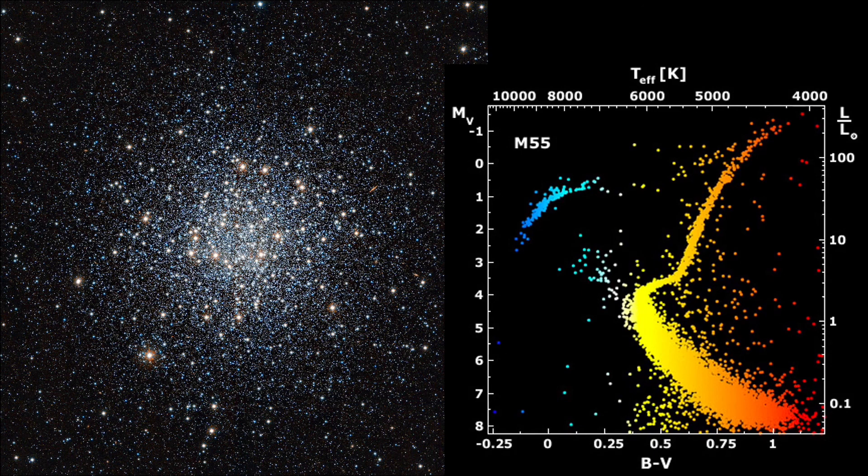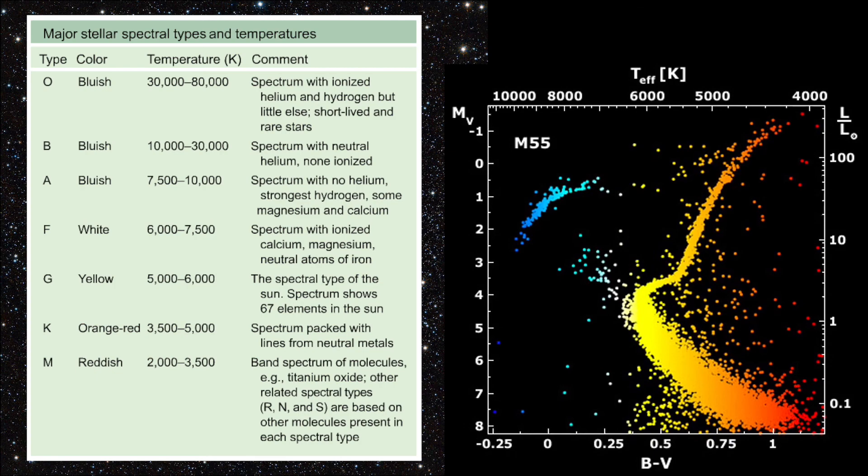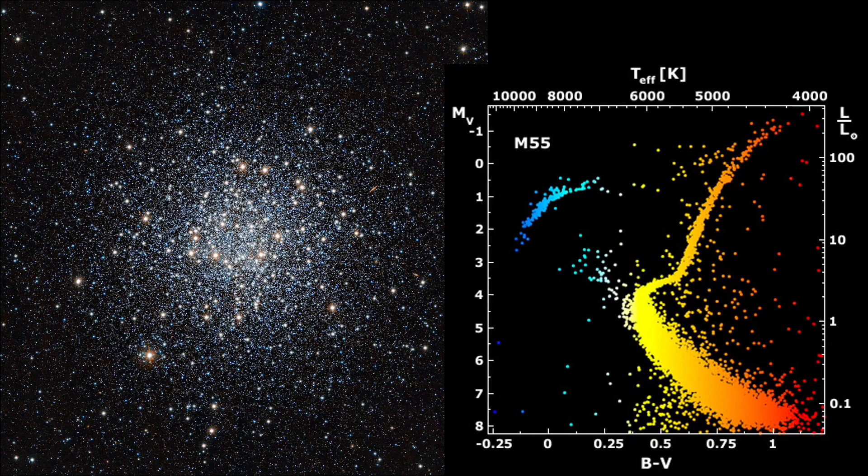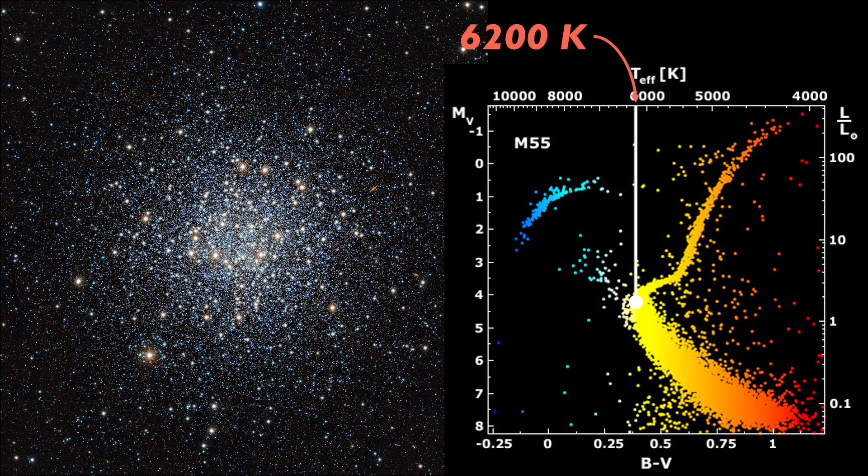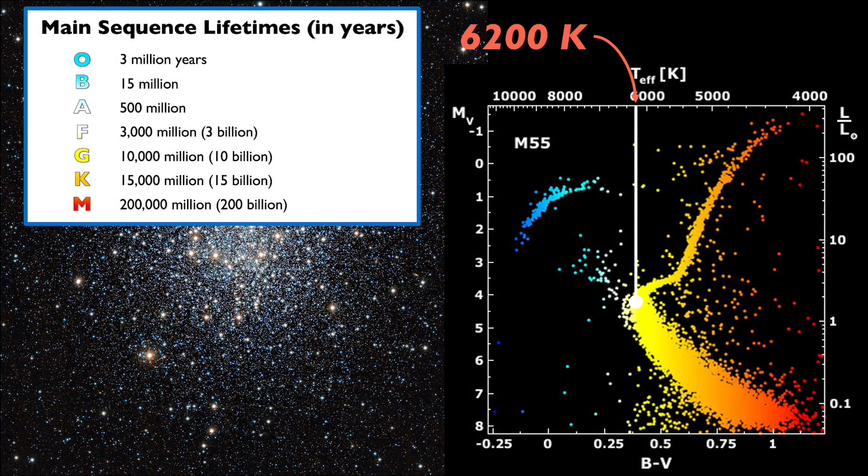Well, recall that the temperatures are associated with specific spectral types, and we can use that approach to determine the age of this star cluster. The main sequence turnoff point for M55 occurs right around 6200 Kelvin. This temperature aligns with an F8 or F9 spectral type, or somewhere thereabouts, which would have a main sequence lifetime of almost 10 billion years, based on the main sequence lifetime estimates that we just saw.